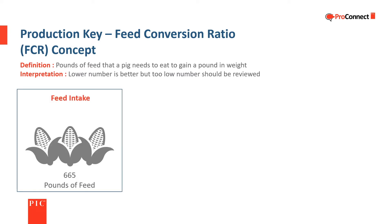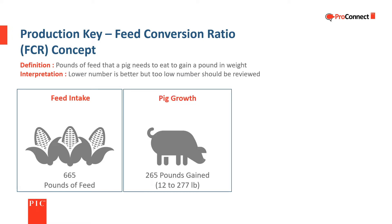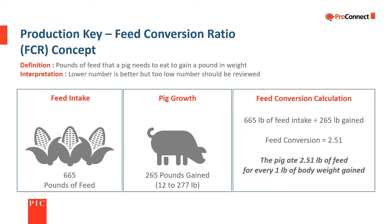The example shows a pig that ate 665 pounds of feed and gained 265 pounds. His feed conversion is calculated by dividing the 665 pounds of feed by the 265 pounds of gain, which gives a feed conversion ratio of 2.51, meaning he ate 2.51 pounds of feed for every pound of weight gained.